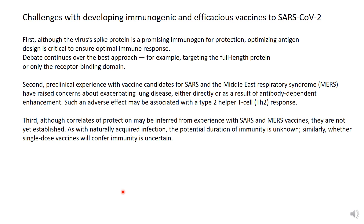Third, what we know about correlates of protective immunity comes from our experience with SARS and SARS-CoV-2. These are not yet established for SARS-CoV-2. It's not known if this will be different for SARS-CoV-2, how durable these immune responses will be, and whether a single-dose vaccine will actually confer immunity or not.